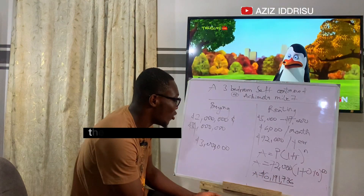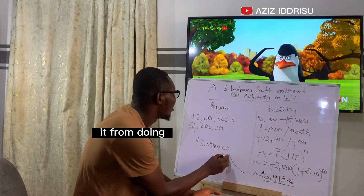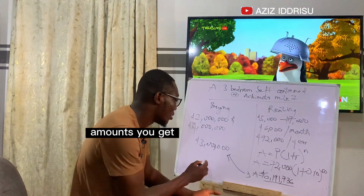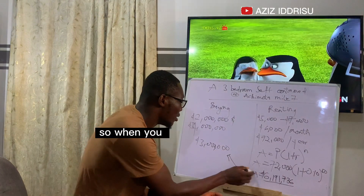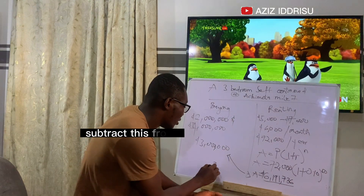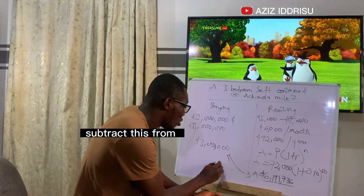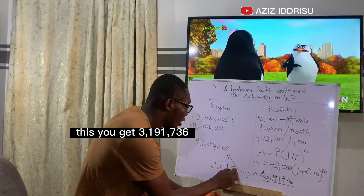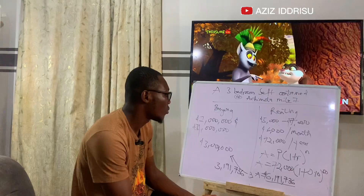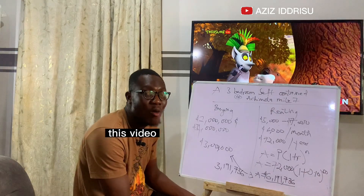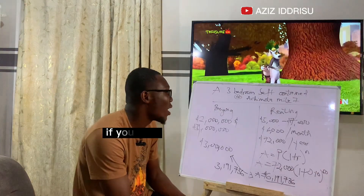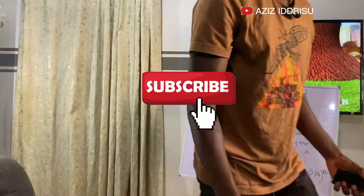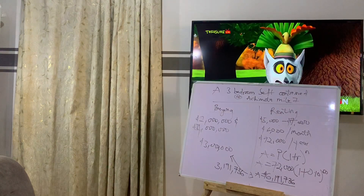So in fifty years you would have paid that amount. When you subtract the outright purchase price of three million cedis from six million one hundred and ninety-one thousand seven hundred and thirty-six cedis, you get three million one hundred and ninety-one thousand seven hundred and thirty-six cedis extra. After watching this video, will you still rent if you can afford to buy a house outright?